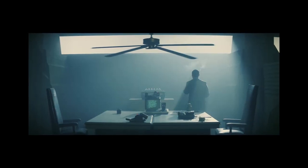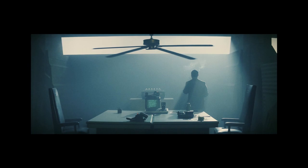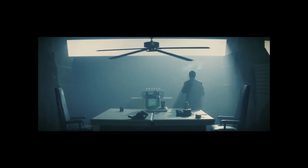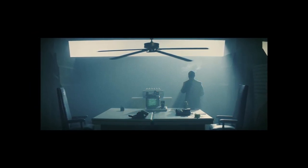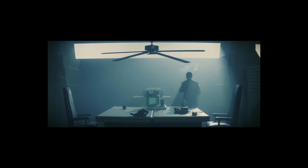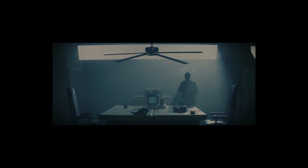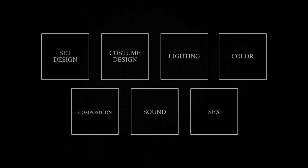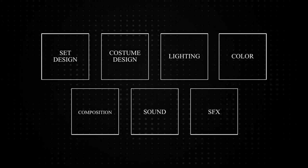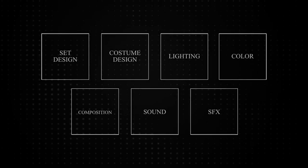Good film design involves the thoughtful and deliberate creation of a visual and aesthetic world that supports the story and enhances the audience's emotional and intellectual engagement with the film. It encompasses a range of elements including set design, costume design, lighting, colour, cinematography, sound, and visual effects.